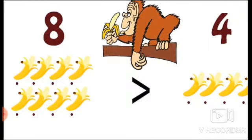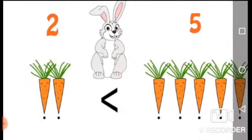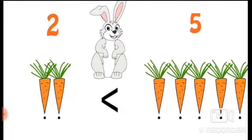And the next picture — students, look at this. This is a rabbit. One side has two carrots and the second side has five carrots. Five is more than two, so the sign is less than.